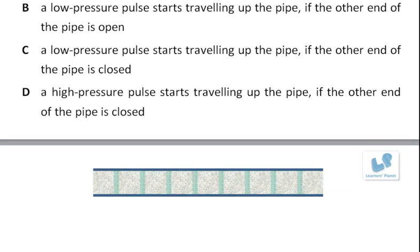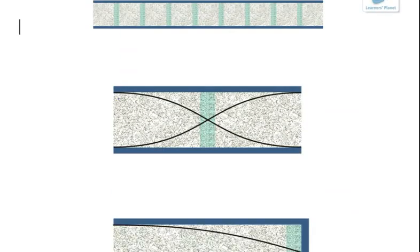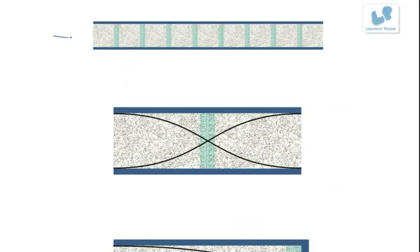Now before we see all the objects, let us understand the situation. We know that when sound travels in open end pipe, it is basically the compression and the rarefaction that is getting transferred with the velocity Vs, that is speed of sound.